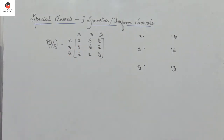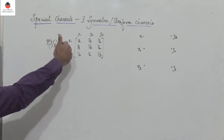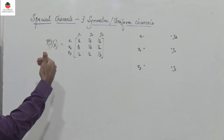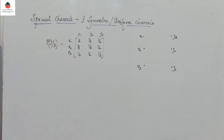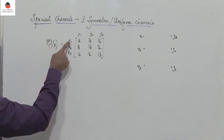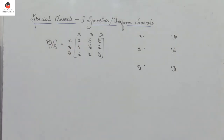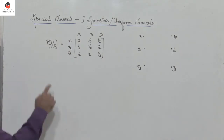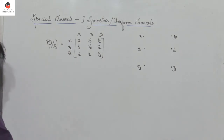So a channel is said to be symmetric or uniform if the second as well as the subsequent rows of the channel contain the same elements as the first row, but they are in a different order. This is P of y given x.